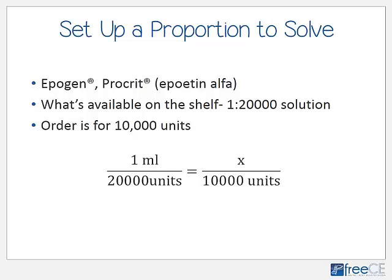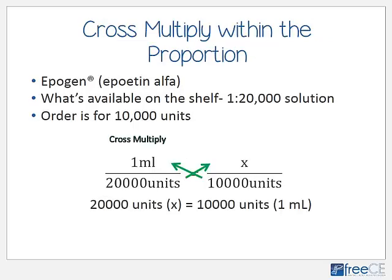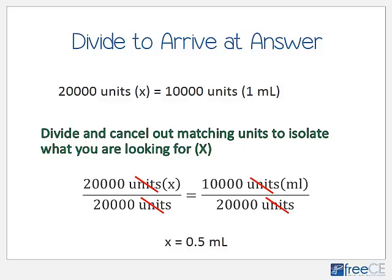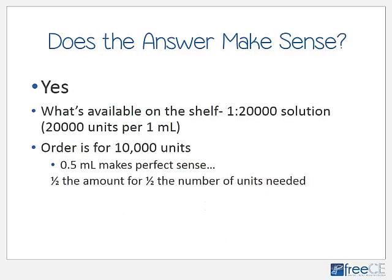Set up a proportion: on one side, 1 mL over 20,000 units; on the other side, x mL over 10,000 units. Cross multiply: 20,000 units times x equals 10,000 units times 1 mL. Divide both sides by 20,000 units, cancel the units, and we're left with x equals 0.5 milliliters. Does our answer make sense? Yes — if the solution contains 20,000 units per milliliter, you need less than 1 mL for less than 20,000 units.